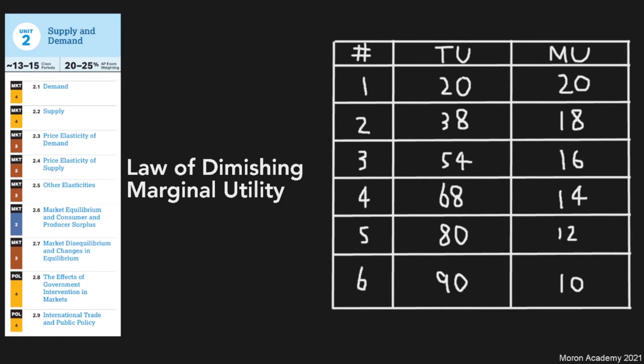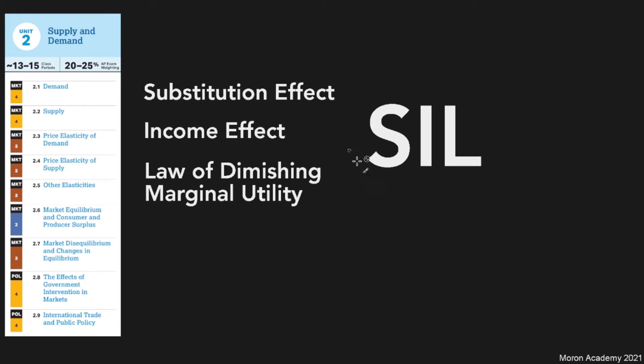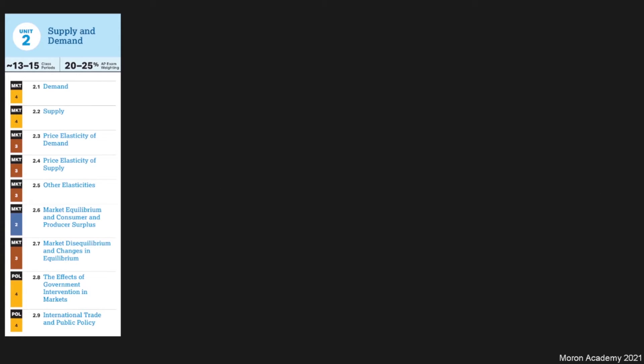If you have trouble remembering it, you can use the acronym SIL: substitution effect, income, and the law of diminishing marginal utility. That's what each of these letters stand for. You don't really need to know this for the AP test that much. I would rather have you stress on what I'm going to be talking about next, which is the five shifters of demand.